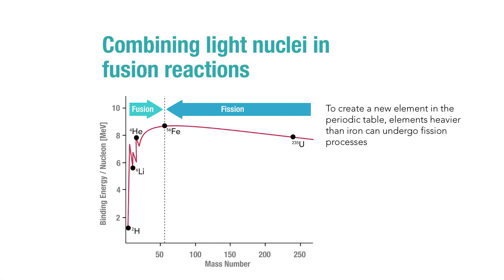If we want to create a new element in the periodic table, then heavier elements — things that are heavier than iron, shown on the right-hand side of the diagram — would have to undergo fission processes.